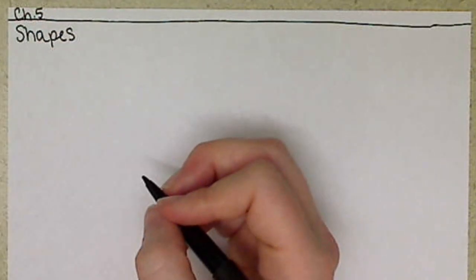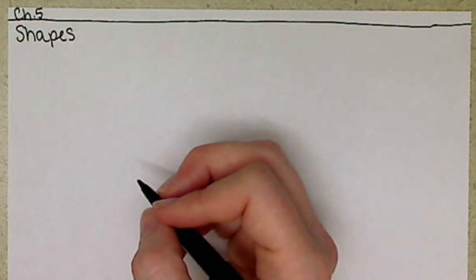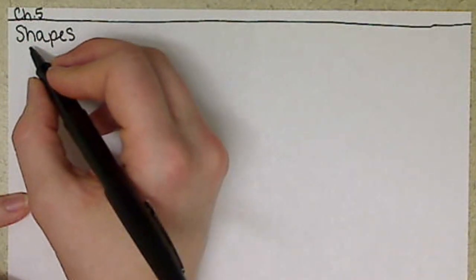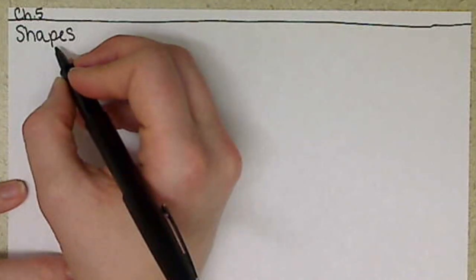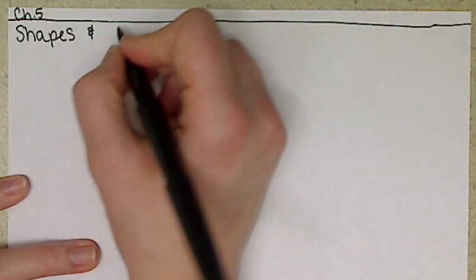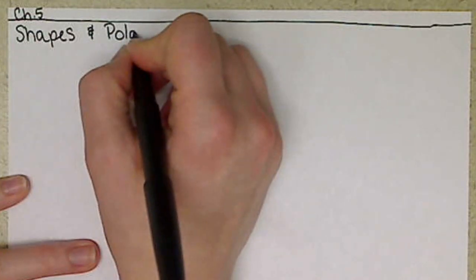Now that we've talked about covalent bonding, getting our names, and discussing how to draw out our molecules, I want to look at the actual shapes that our molecules are forming. And we are going to talk about polarity.